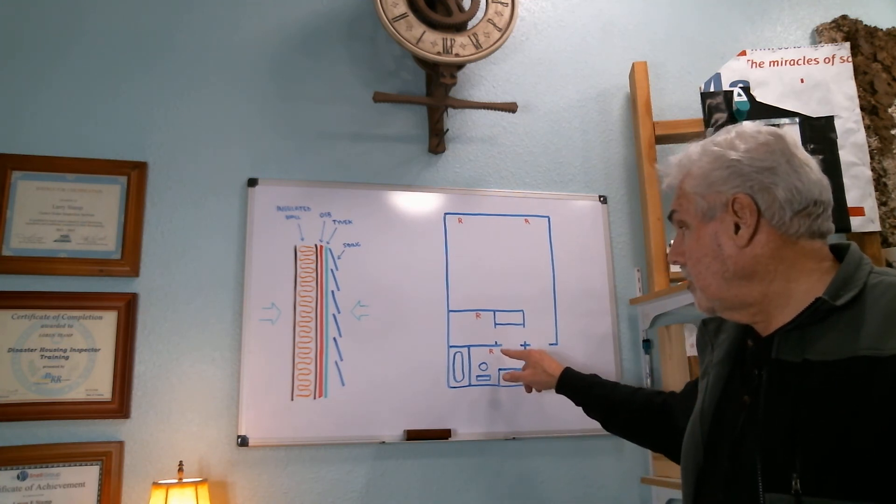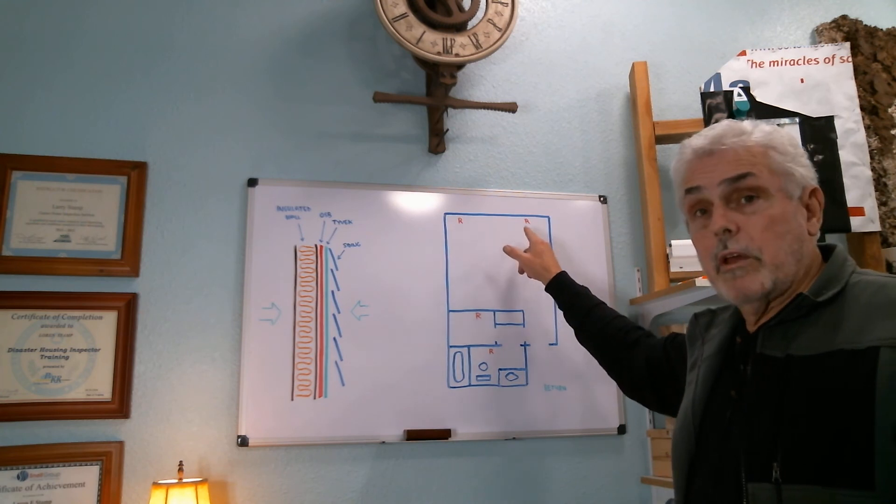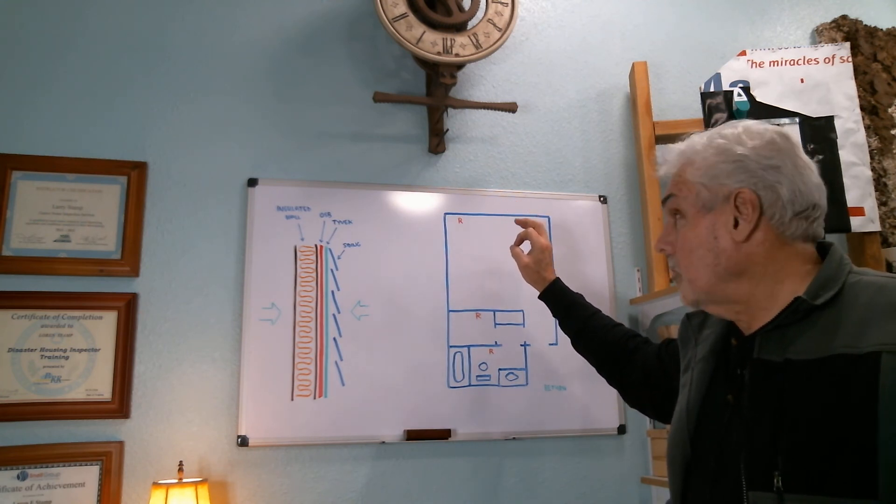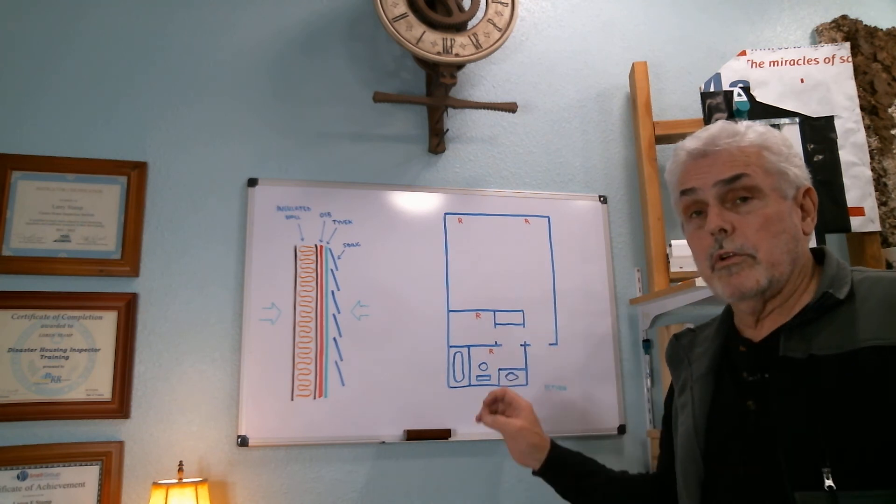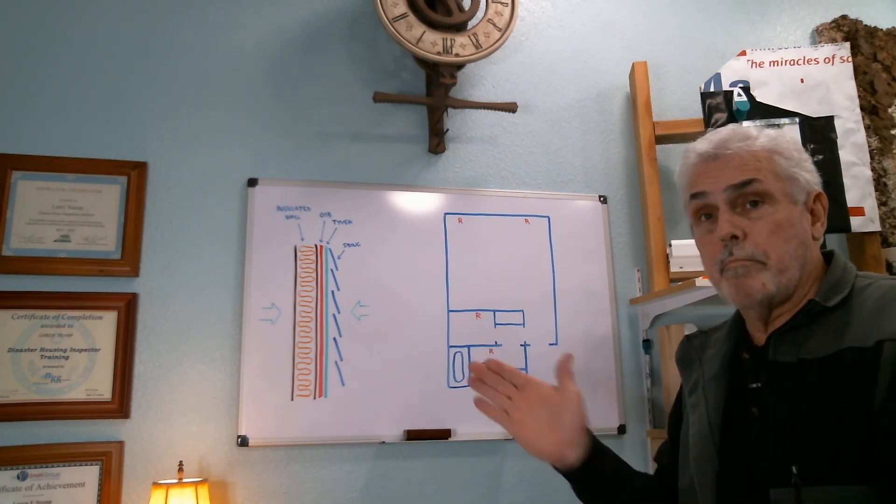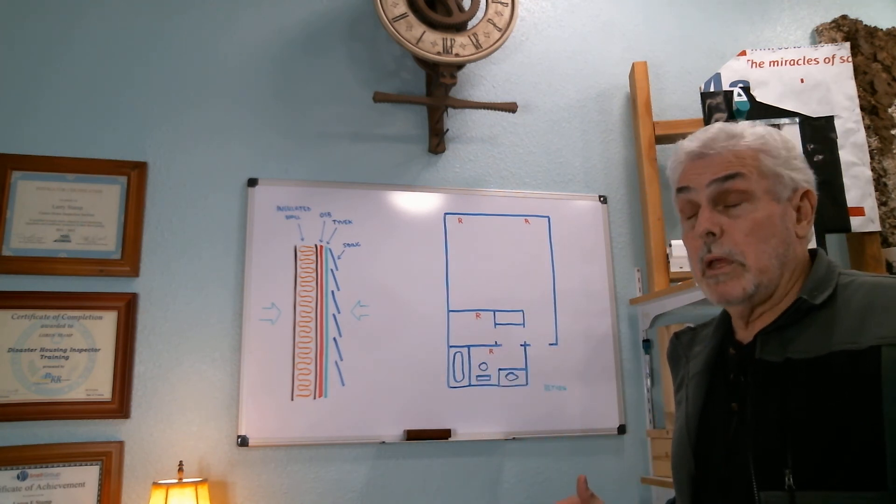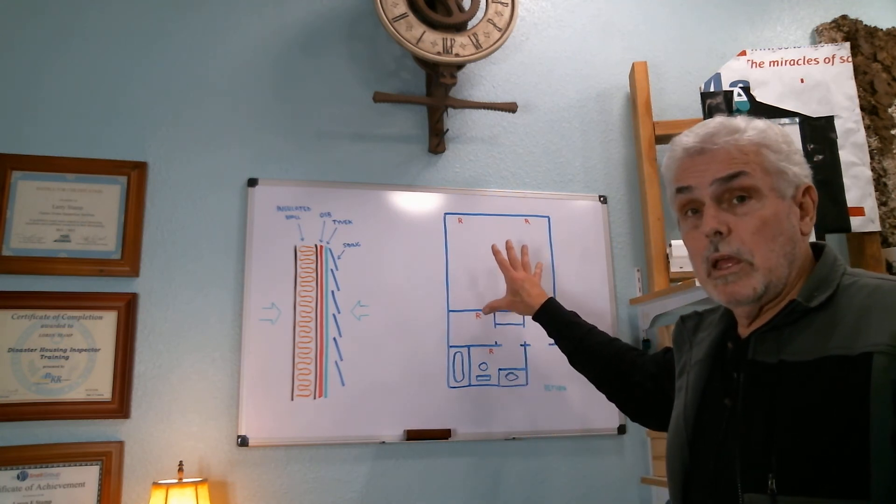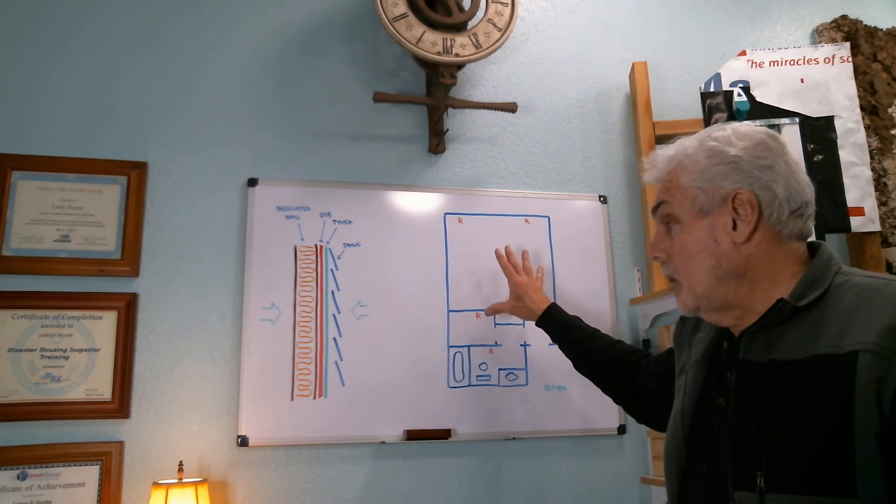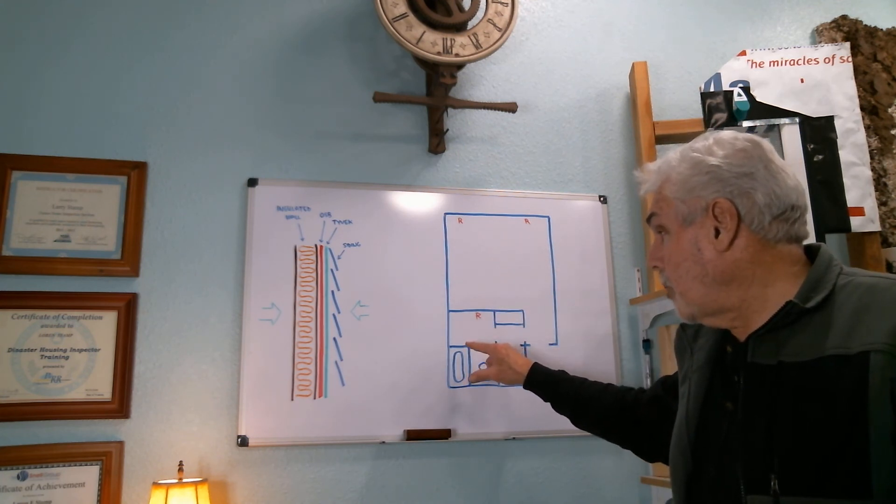The furnace return is out in the hallway. And you'll notice each of these R's represents a heat register. So I cock this door, I turn on the furnace, and the door goes bam. I mean, literally, slams closed. There's so much pressure in that room.